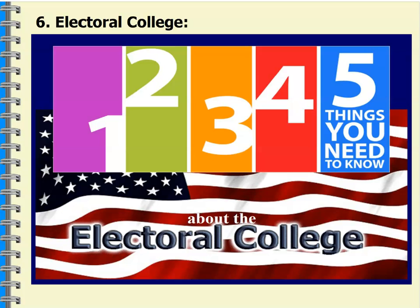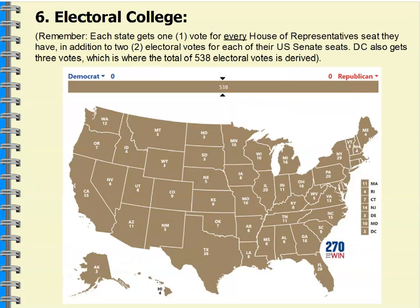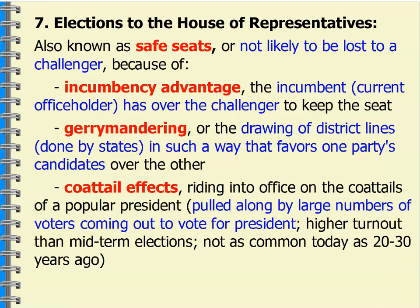This is always a fun one to look at: 270towin.com. You can make your own Electoral College map, which is always kind of fun and exciting — see how they match up, make your predictions for 2020. They also have maps you can start with and modify based on your own predictions. Have some fun with that.